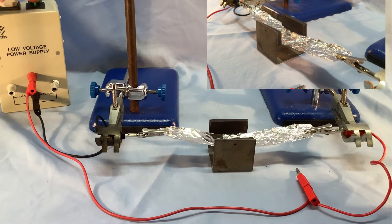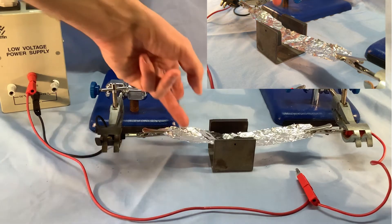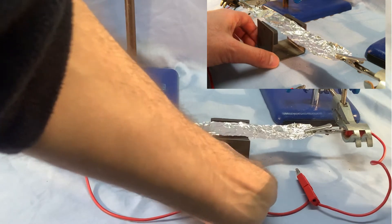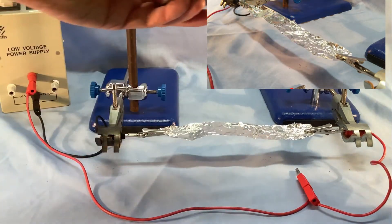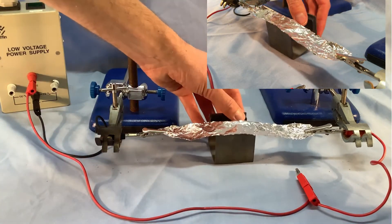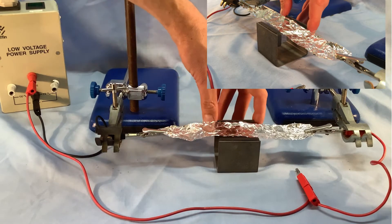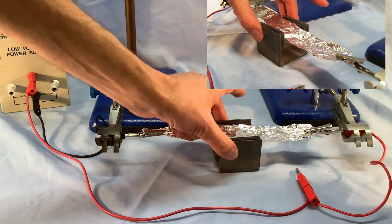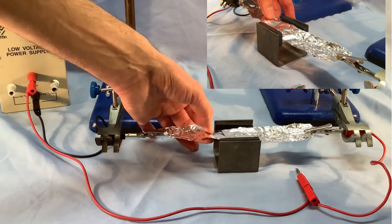Okay, now I can reverse the direction of the magnetic field by taking this out and putting it back in the other way round. And now if I position the foil back between the magnets